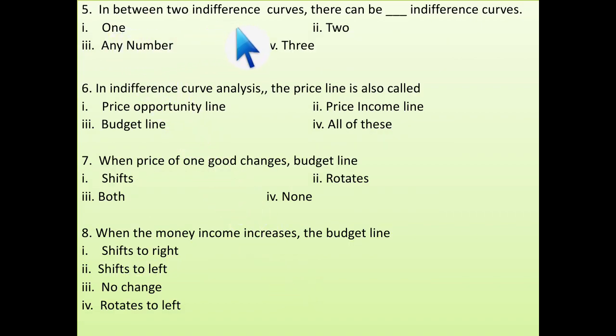Next, in between two indifference curves, there can be dash number of indifference curve. Well, in between two indifference curves, there can be any number of indifference curve. And what it denotes, the indifference curve become right to another, it will denote higher amount of satisfaction. And in case of leftward, it will denote lower amount of satisfaction.